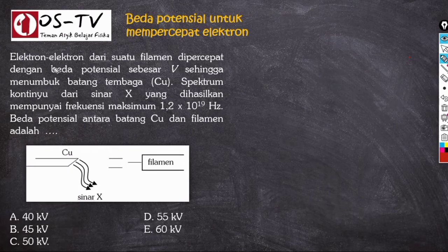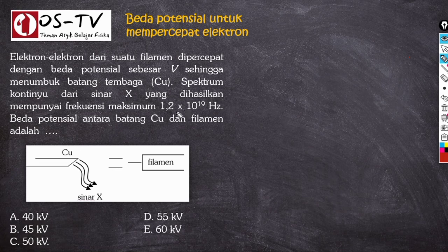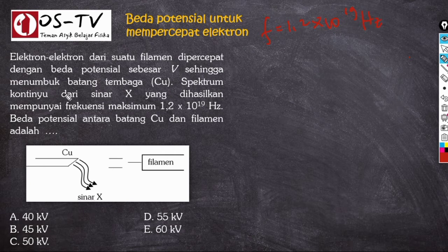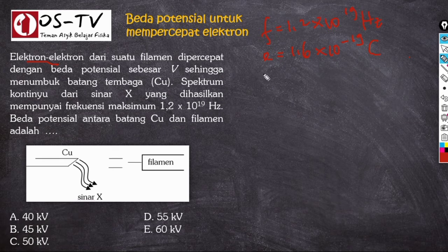Soal: elektron-elektron dari suatu filamen dipercepat dengan beda potensial V sehingga menumbuk batang tembaga (Cu), dan spektrum kontinu dari sinar X yang dihasilkan mempunyai frekuensi maksimum 1,2 × 10¹⁹ hertz. Beda potensial antara batang Cu dan filamen adalah berapa? Diketahui frekuensi = 1,2 × 10¹⁹ Hz, muatan elektron e = 1,6 × 10⁻¹⁹ coulomb. Yang ditanyakan adalah beda potensial V.